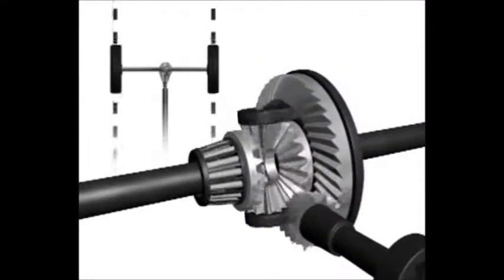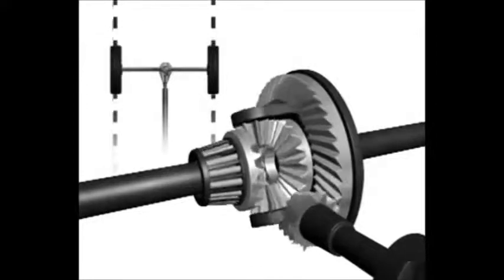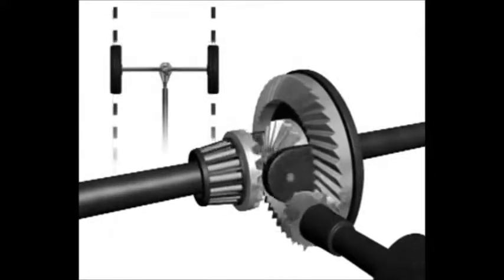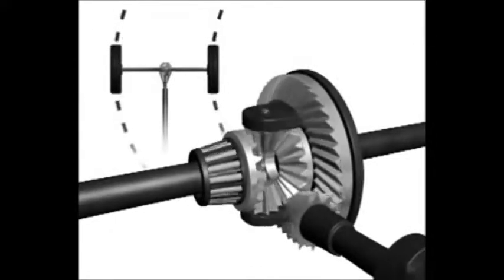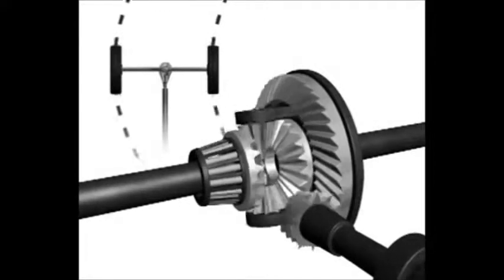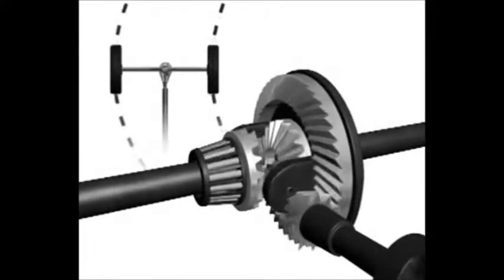When the vehicle is traveling straight, the left and right axles turn at the same speed. When the vehicle is turning, the difference in rotating speed between the two axles is compensated for by the differential gears.